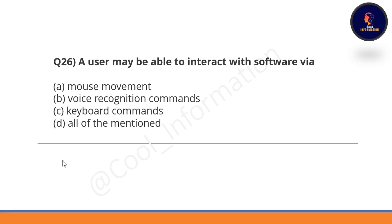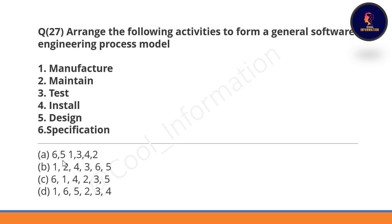Question 26: A user may be able to interact with software via what? Mouse movement, voice recognition, command, or keyboard commands — all of the answers mentioned are correct. We can interact with software via mouse movement, voice recognition, or keyboard commands. Option D is correct.